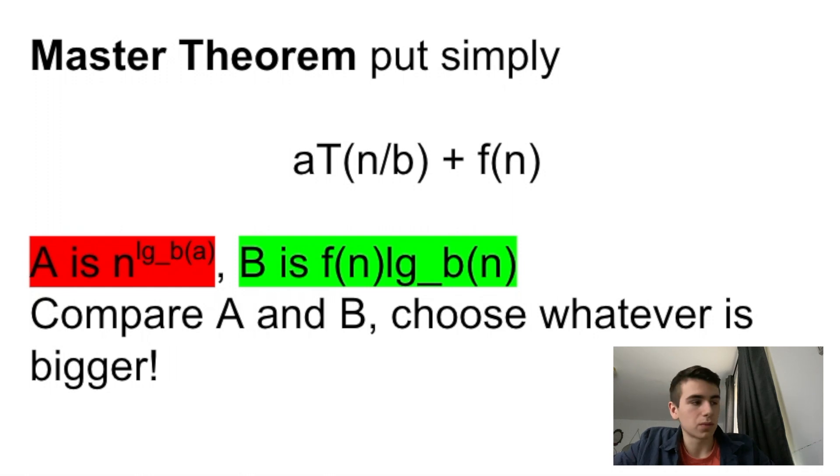And you can notice where these patterns come from. The n^(log_b(a)) is really just the same thing as 2^(log n), because another log rule tells us that you can flip the two and the n. So it actually is n^(log_2(2)). It's equivalent. And that's just easier to think of for our purposes.